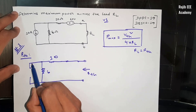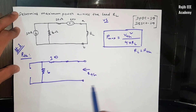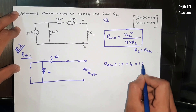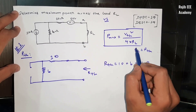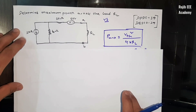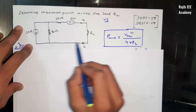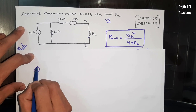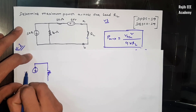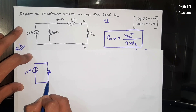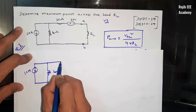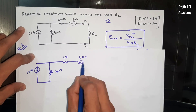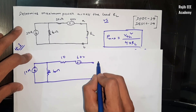First of all, RTH calculation will be done. Then mesh analysis will be applied. Our circuit with the load resistance removed is drawn: 10A current source, 6Ω resistance, 10Ω resistance, 60V active voltage source, and AB terminal open.